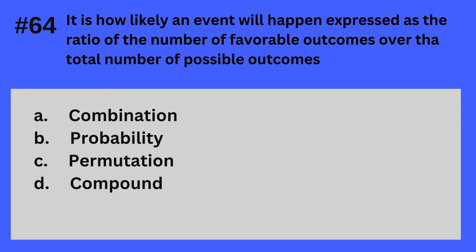Question 64. It is how likely an event will happen, expressed as the ratio of the number of favorable outcomes over the total number of possible outcomes. A. Combination, B. Probability, C. Permutation, D. Compound. The answer is B — Probability.